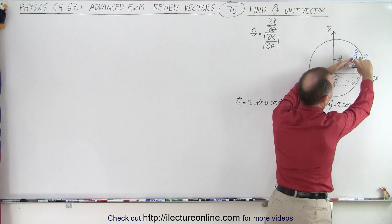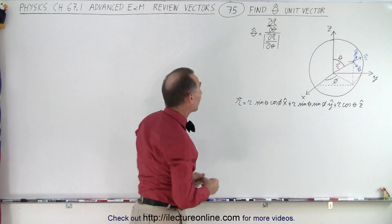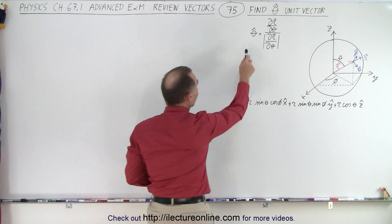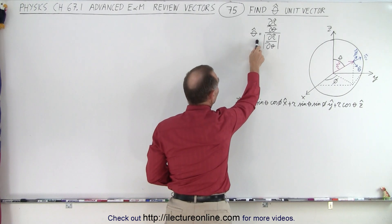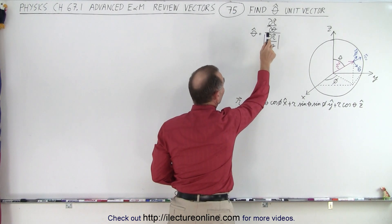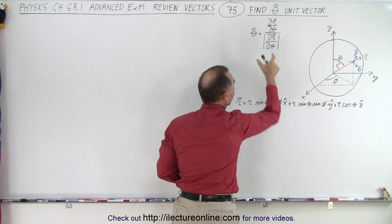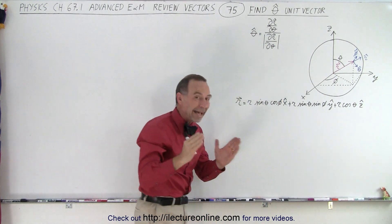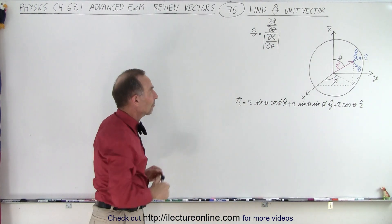That's the vector we're trying to find — it's a unit vector. The way we can do that is by using the definition that the theta unit vector is equal to the partial derivative with respect to theta of the r vector, divided by the magnitude of that, so we get the unit vector.